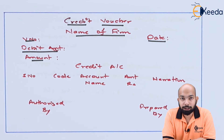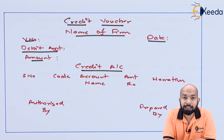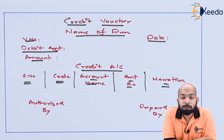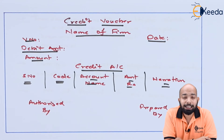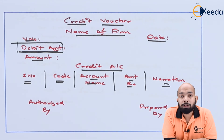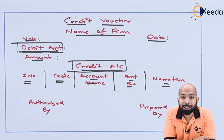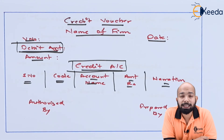Under the debit voucher you had a debit account section; under the credit voucher you have a credit account section. The same five columns apply: serial number, code number, account name, amount, and narration. The next two columns — authorized by and prepared by — also remain the same. In the debit voucher, the top-left shows the credit account; in the credit voucher, it shows the debit account. These are the only two differences; everything else remains the same.